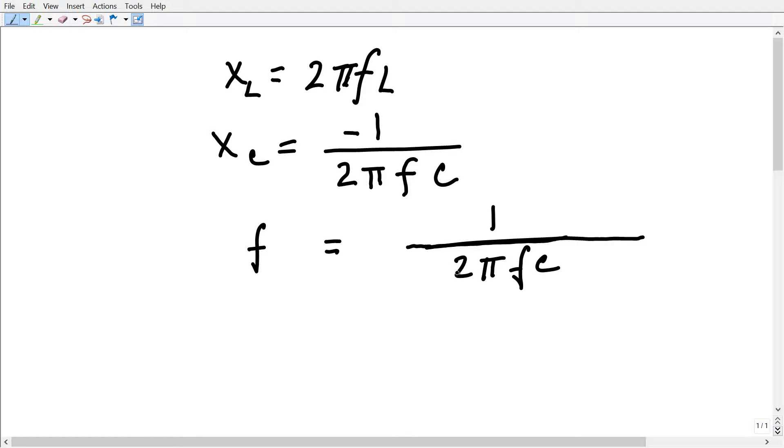So we're going to get 2π times 2π times f times c times L. Remember, f is in hertz, c is in farads, and L is in henrys, and we can worry about the conversions later. f is in hertz.